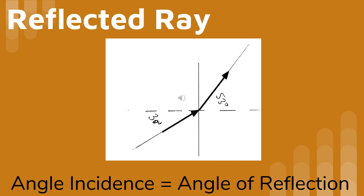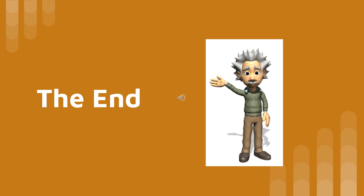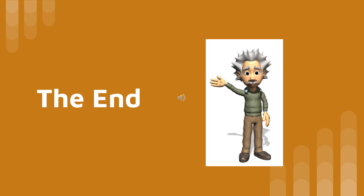Once again, whenever there is refraction, there is always reflection. The reflection always occurs inside the first medium. This is the end of my presentation on measuring and drawing reflection and refraction rays.